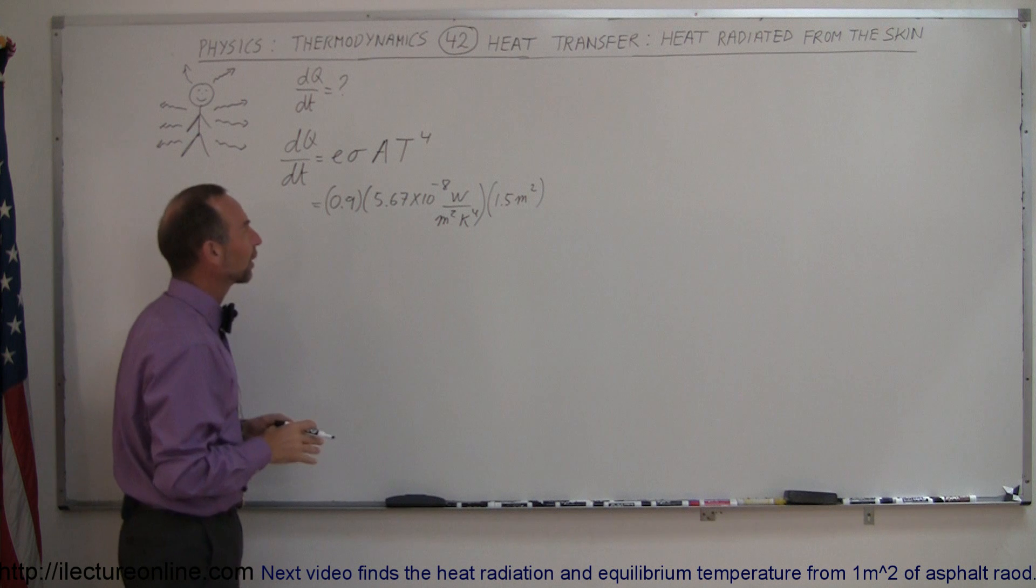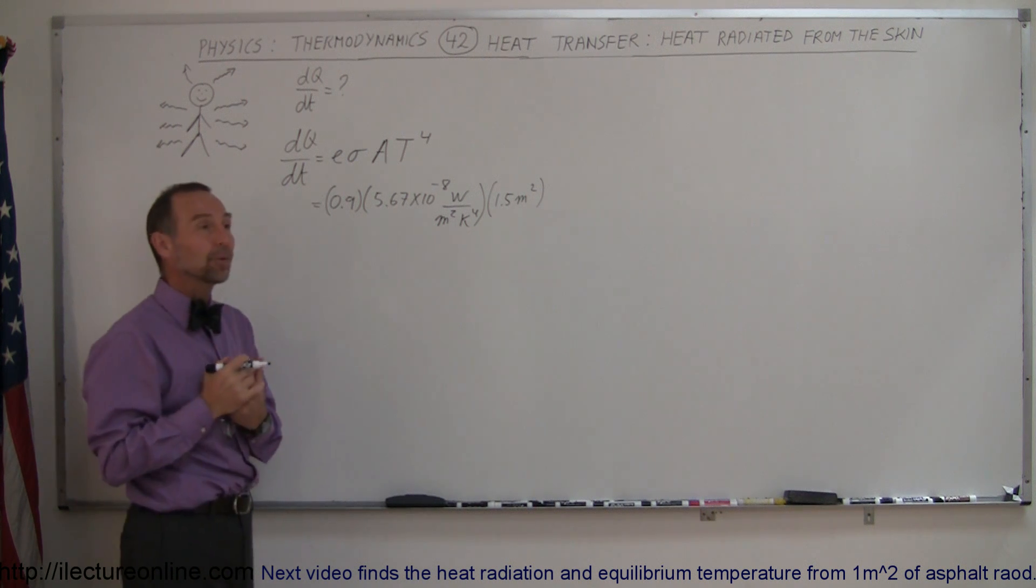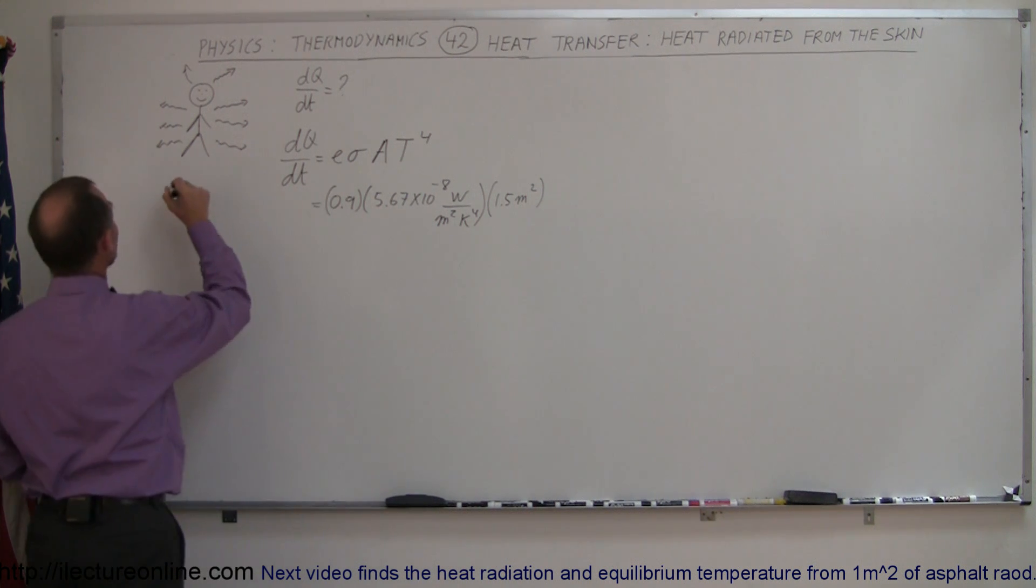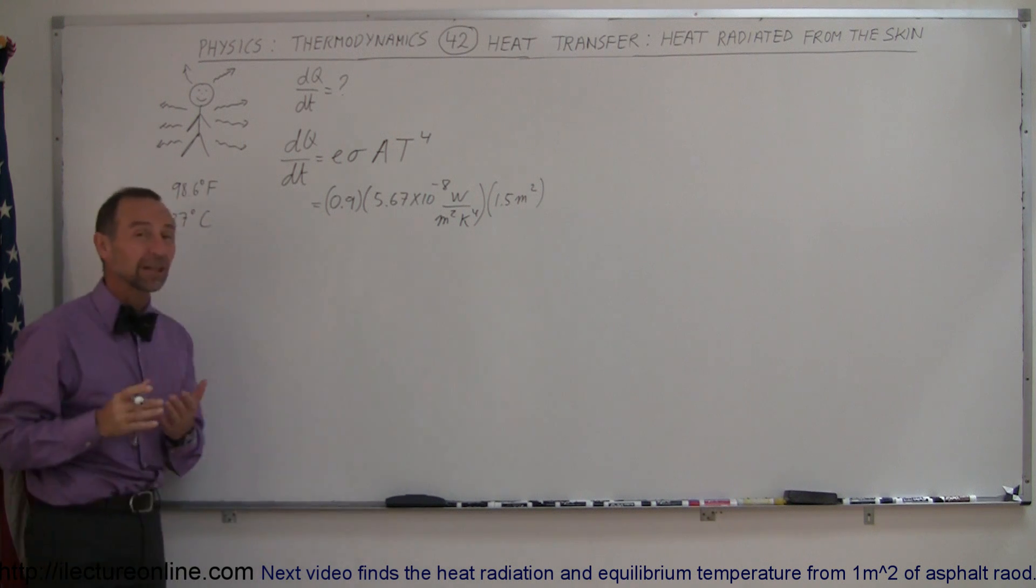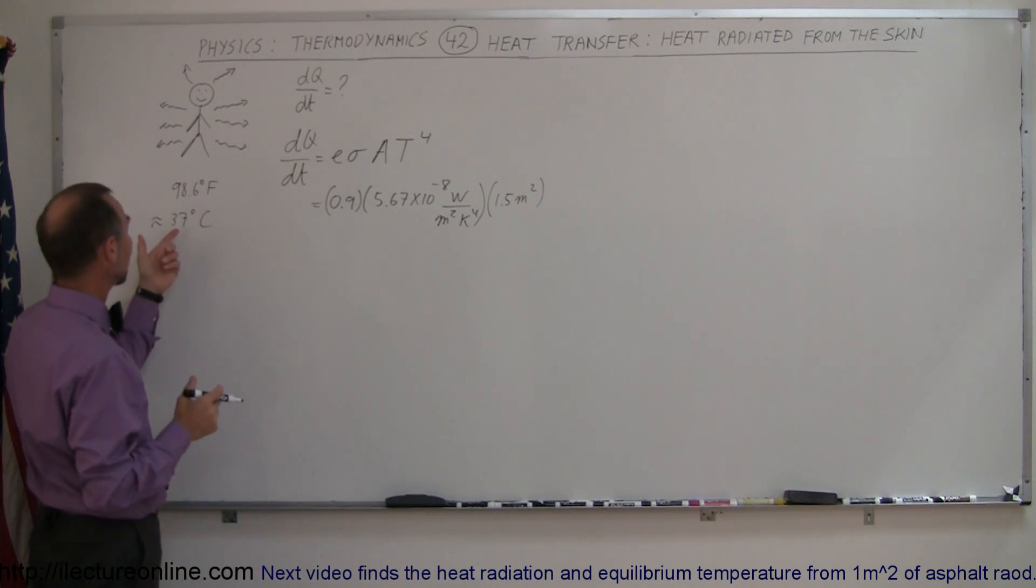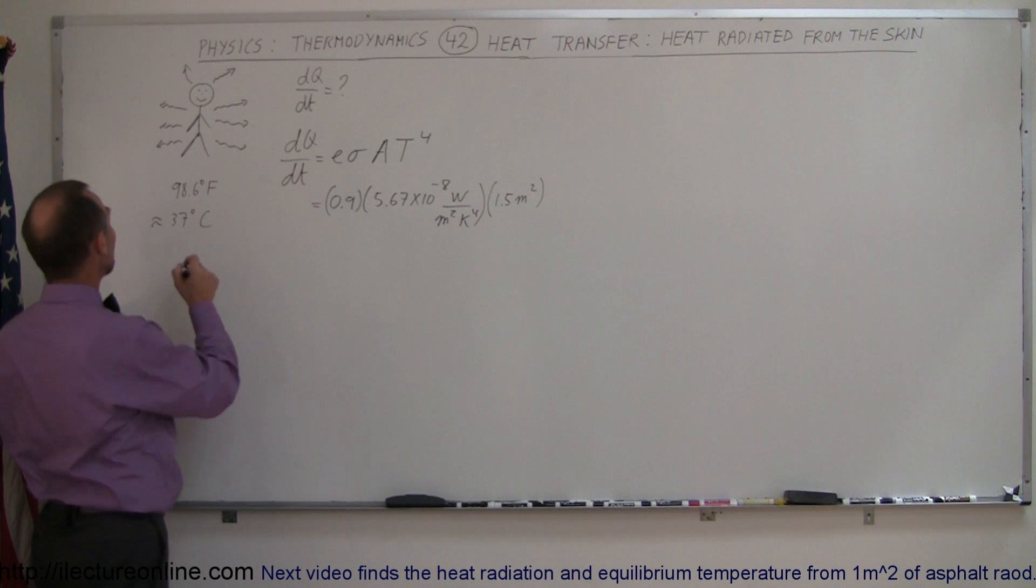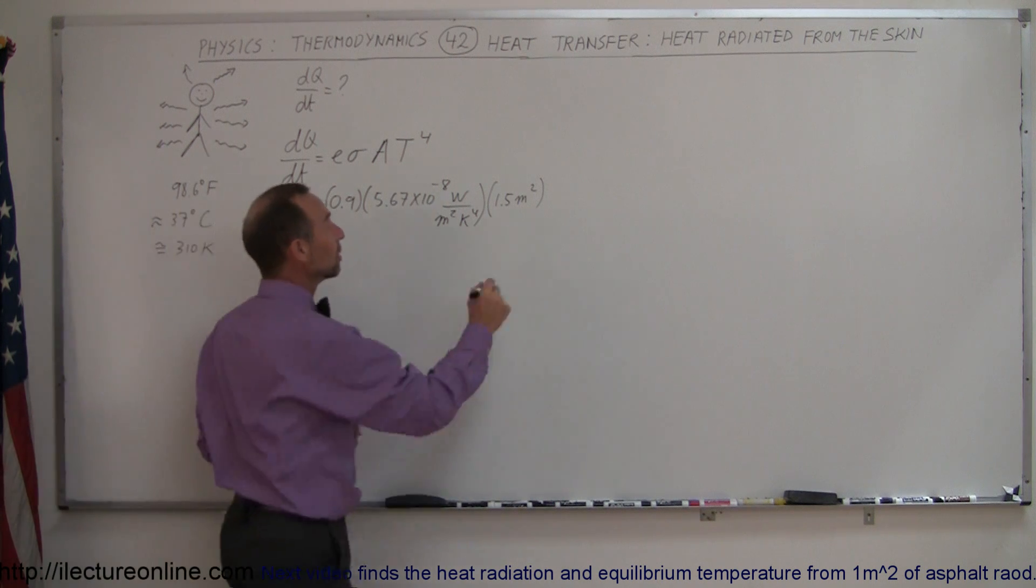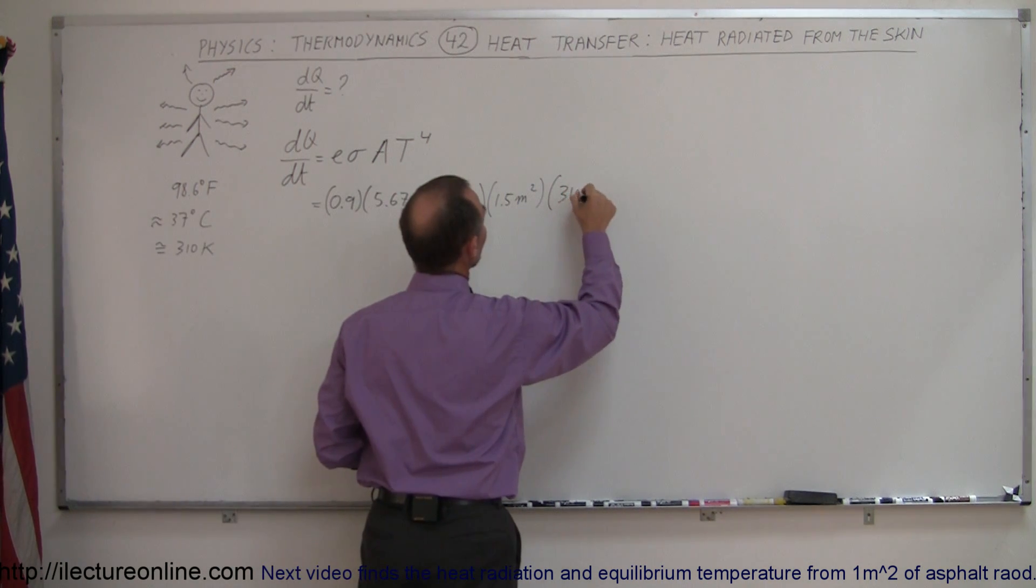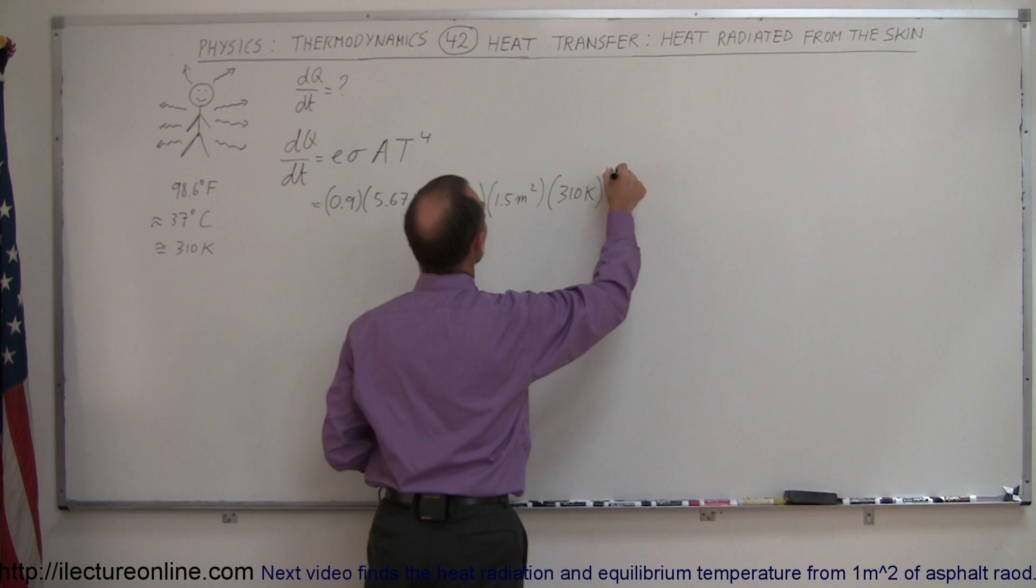And then the temperature of the body. Typically the temperature of the body is 98.6 degrees Fahrenheit, which is about equal to 37 degrees centigrade. Of course, we have to convert that to Kelvin. To convert that to Kelvin, we have to add 273, which means it's about equal to 310 Kelvin. That's the temperature we're going to use in the equation, so 310 Kelvin to the 4th power.